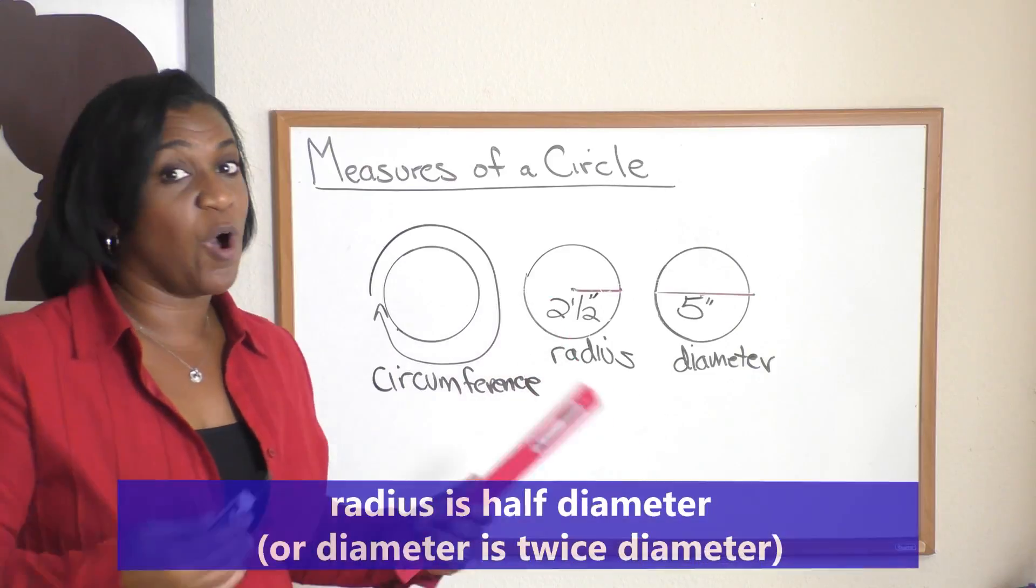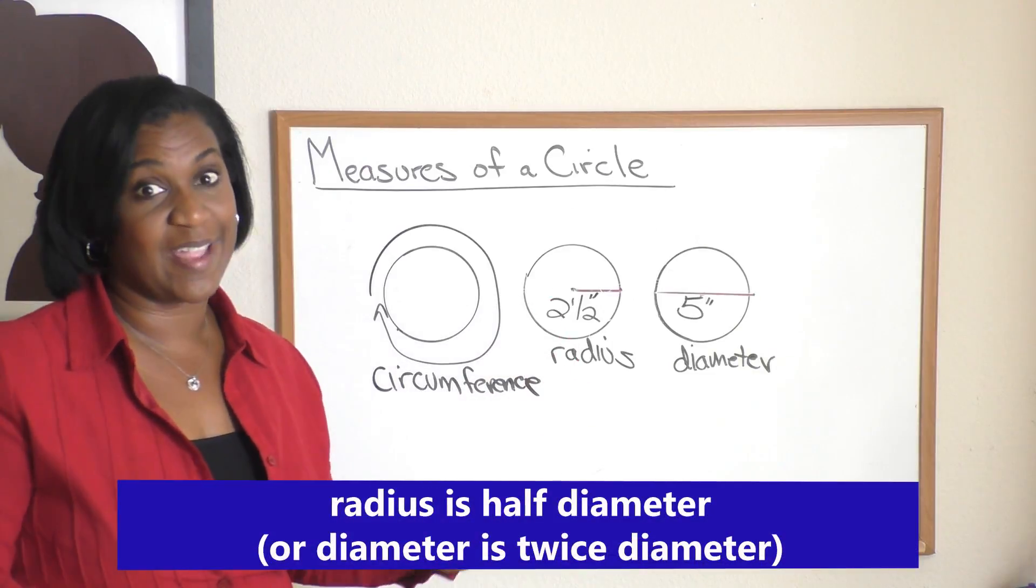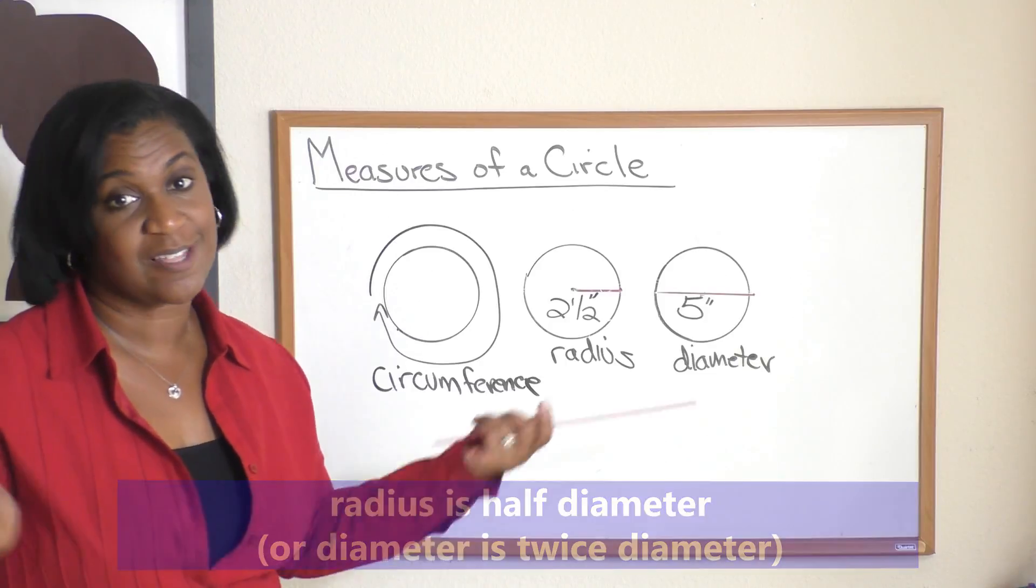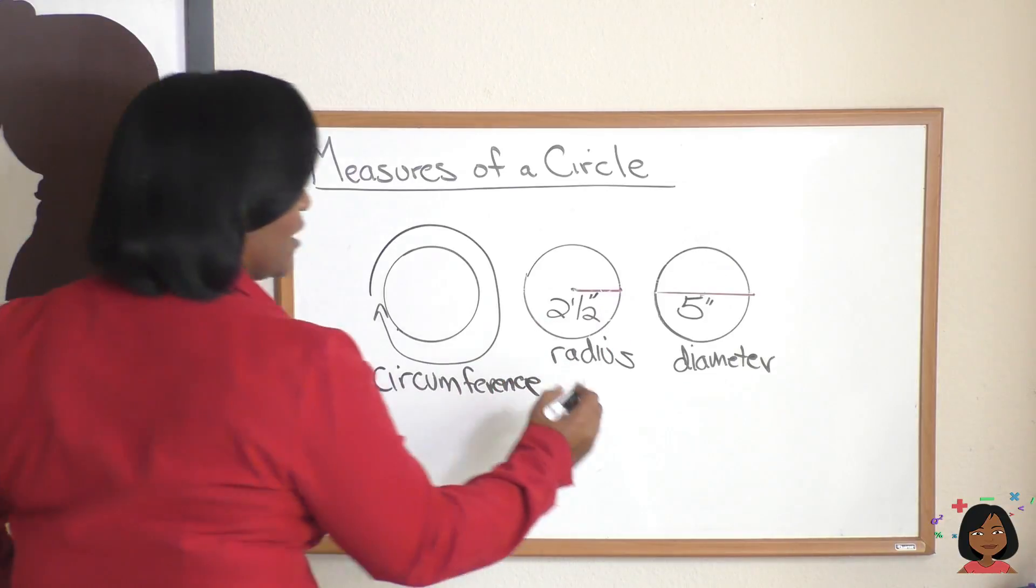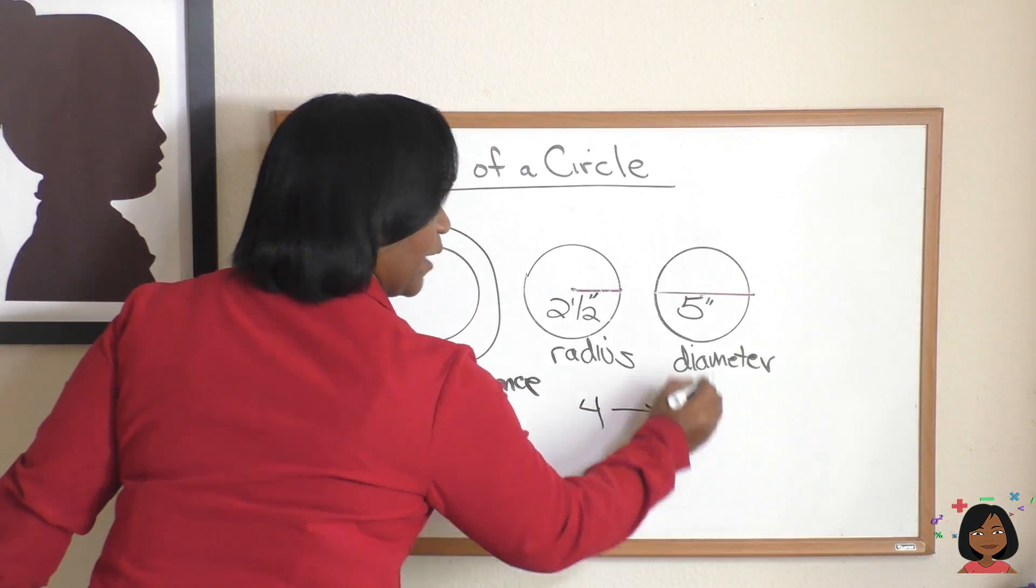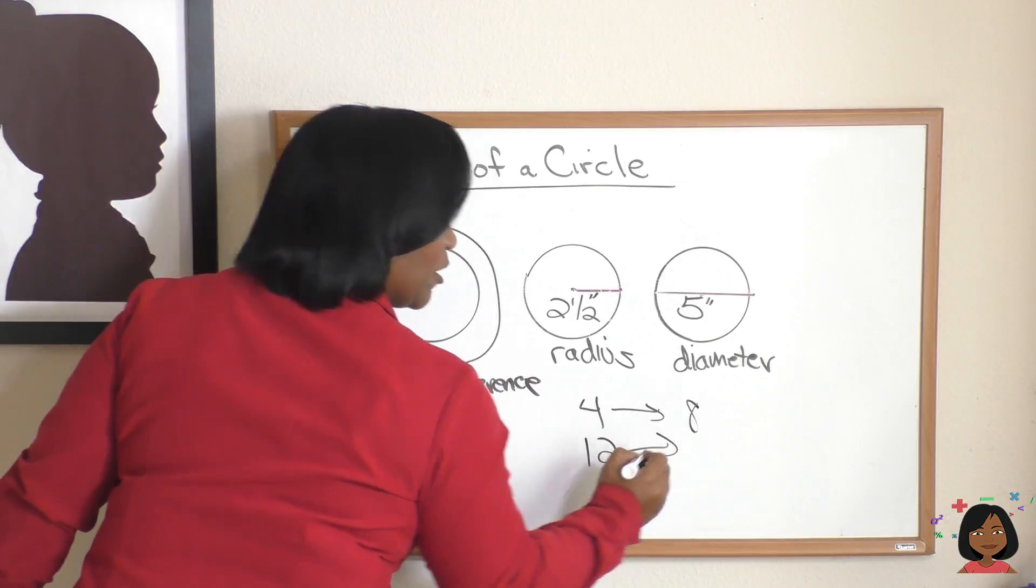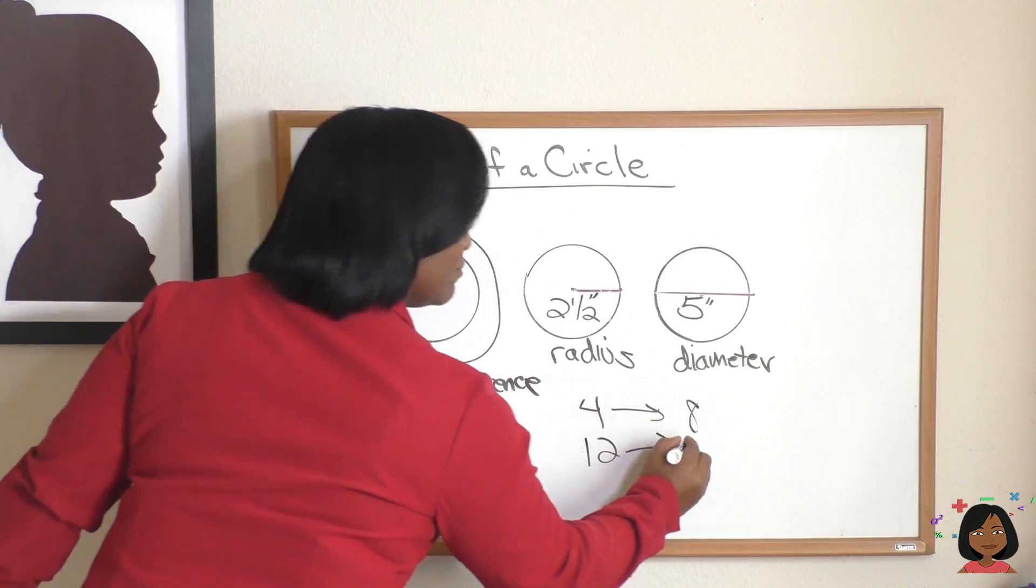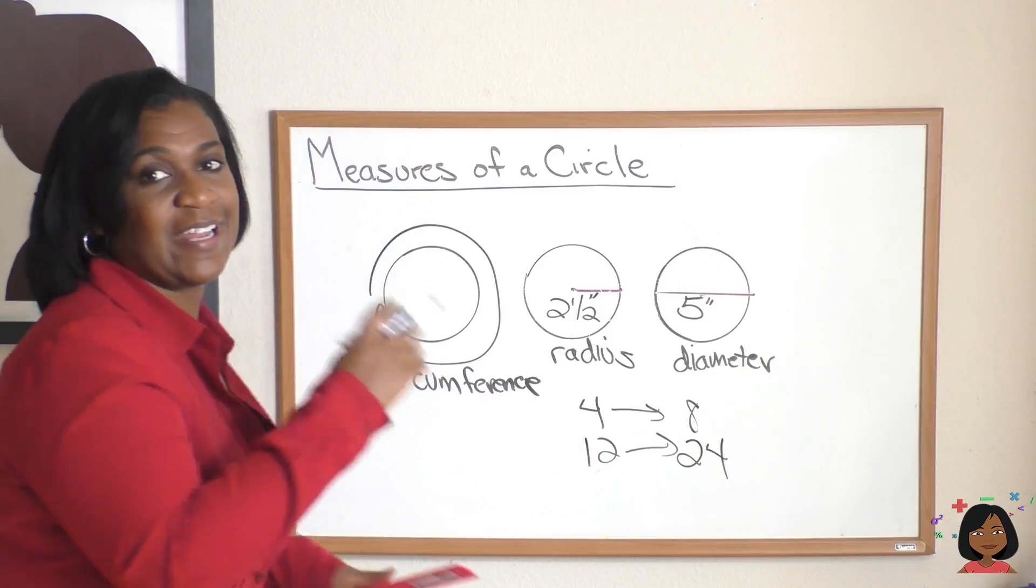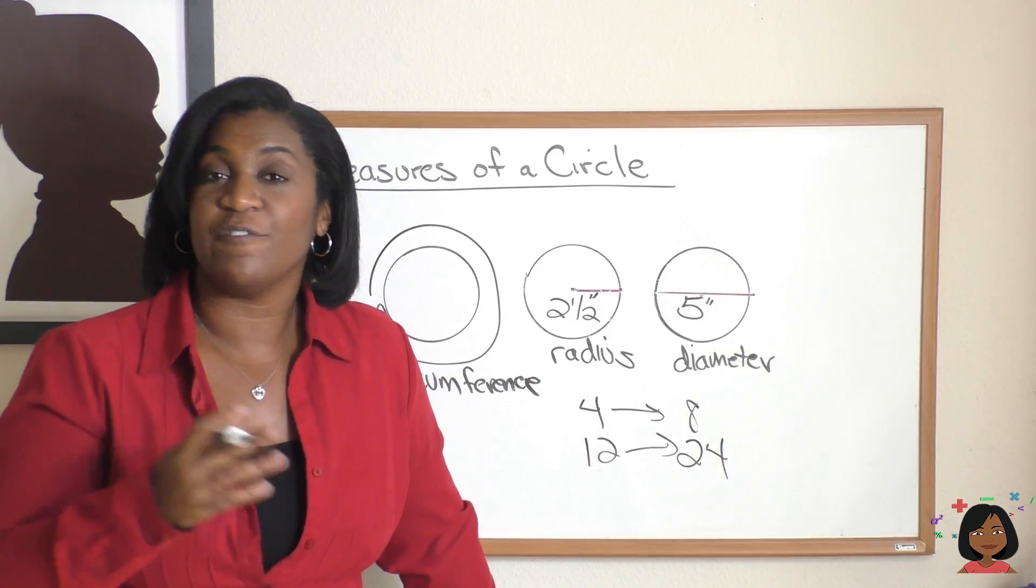So as you can see, your radius is always going to be half your diameter, or you could say your diameter is going to be twice your radius. So that means if I had a radius of four, what's my diameter? Eight. If I had a radius of 12, what's my diameter? 24. You're getting the pattern. Each and every time your radius is going to be half of your diameter.